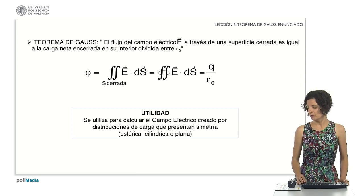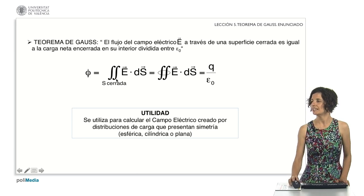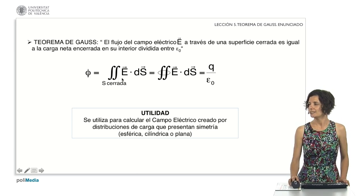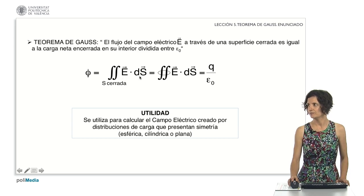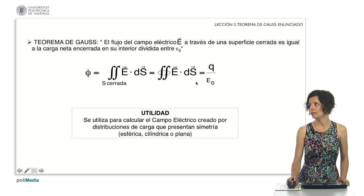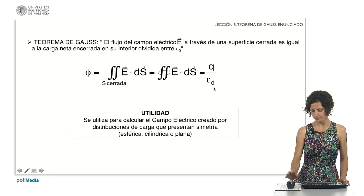As we have already seen, the expression of the flux is the surface integral of the scalar product between the electric field vector and the differential area vector. Since the integral is to be evaluated on a closed surface, a special closed-surface symbol is also used. Gauss's law tells us that this flux is equal to the enclosed charge divided by epsilon sub zero.